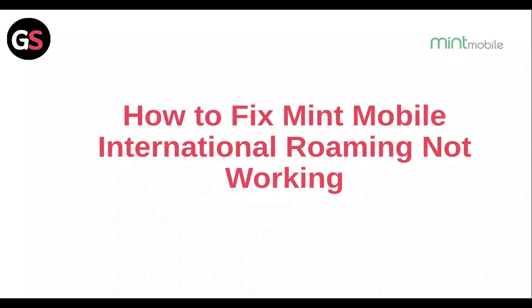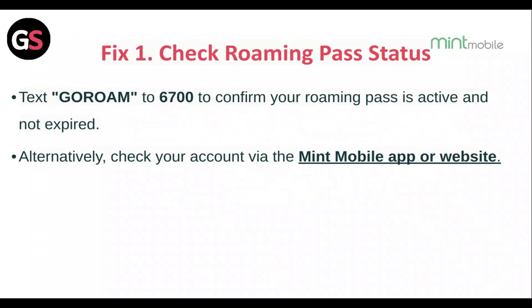Hi everyone. In today's video we will see how to fix Mint Mobile international roaming not working. Fix 1: Check the roaming pass status. Text 'GO HOME' to 26700 to confirm your roaming pass is active and not expired. Alternatively, check your account via the Mint Mobile app or website.